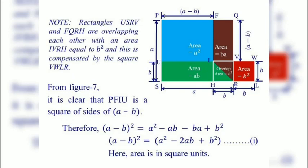Rectangles USRV and FQRH are overlapping each other with an area equal to B square, and this is compensated by the square VWLR. From figure 7 it is clear that PFIU is a square of side A minus B units. Therefore, A minus B whole square is equal to A square minus AB minus BA plus B square, which implies A minus B whole square is equal to A square minus 2AB plus B square, where area is in square units.